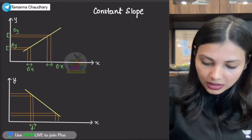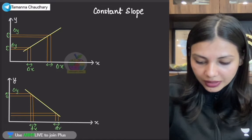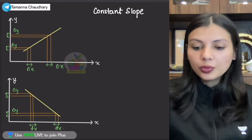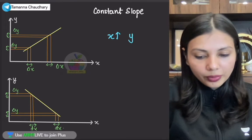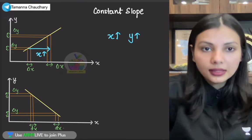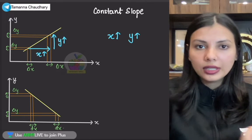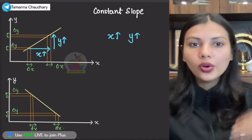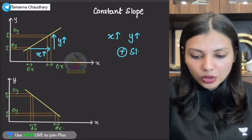Dekho, main chhota sa X quantity mein change leke aayi, to uski wajah se ek chhota sa Y quantity mein change aaya. Ek chhota sa main X quantity mein change leke aayi, to usi tariqe se ek chhota sa Y quantity mein change aaya. What is the difference between both of these graphs? Yahaan par jab tum X ko increase kar rahe ho, Y bhi tumhara increase kar raha hai. Jab tum yahaan se lekar yahaan tak ja rahe ho, tumhara X increase hua. Lekin phir, wahi chakkar mein, tumhara Y bhi increase hua. Isko bolte hain positive slope — if one quantity is increasing, the other quantity is also increasing, or if one quantity is decreasing, the other also decreases. Is tariqe ke slope ko bola jaata hai positive slope.